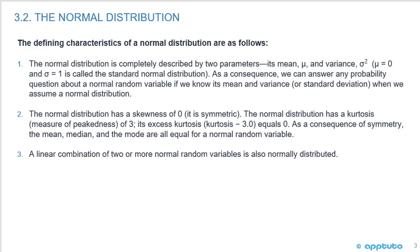The defining characteristics of a normal distribution are as follows. One, the normal distribution is completely described by two parameters: its mean, we use the Greek symbol μ for that, and its variance.